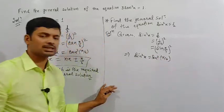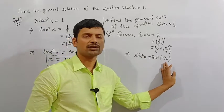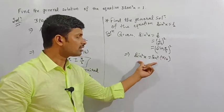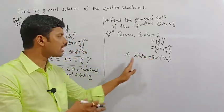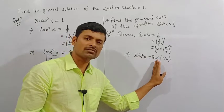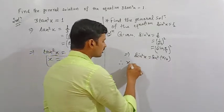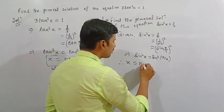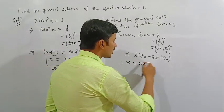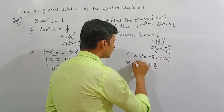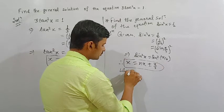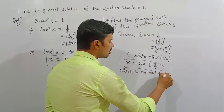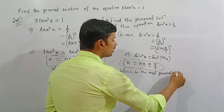This is in the form of sin squared theta is equal to sin squared alpha. Because this is matched with the theorem sin squared theta equals sin squared alpha, the general solution is theta equals n pi plus or minus alpha. So x equals n pi plus or minus alpha, where alpha is pi by 4. This is the required general solution.